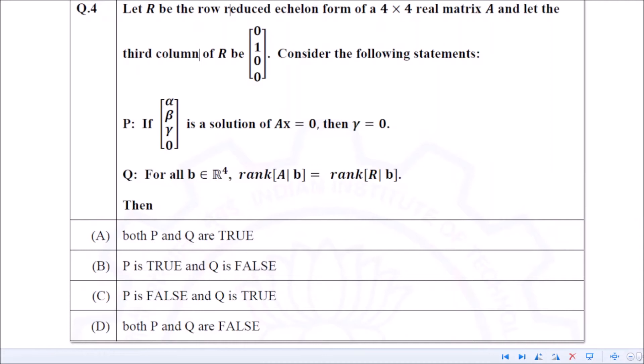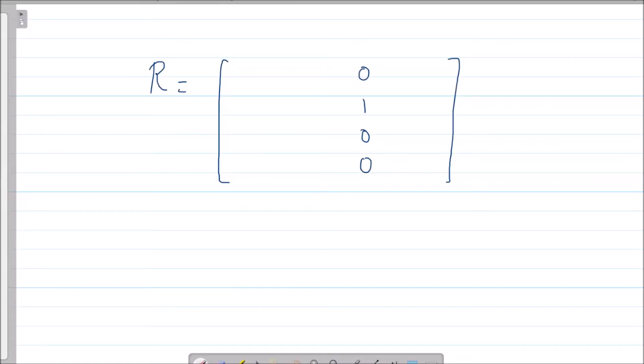Let's try to see that. The third column of R is [0, 1, 0, 0]. Since R is RREF, if I take the first entry as 1 and these as 0, 0, 0, then all entries below the 1 should be 0.